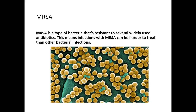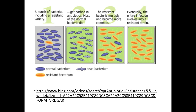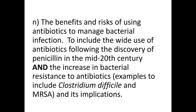An exam question you may encounter asks how MRSA has evolved. This links to natural selection — taken directly from a mark scheme: there is normal genetic variation within a population; a random mutation occurs giving rise to an antibiotic-resistant allele; antibiotics act as the selection pressure; the allele coding for antibiotic resistance is passed on to offspring; and allele frequency increases over many generations. The diagram here shows one resistant bacterium surviving, reproducing, and passing on its genes, leaving a population of resistant bacteria. Good luck with your exams!